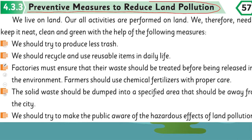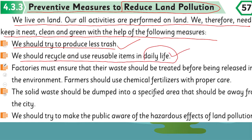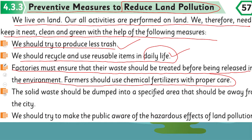Now let's talk about preventive measures — kis tariqa se land pollution ko control kiya ja sakta hai. We live on land; all our activities are performed on land. We therefore need to keep it neat, clean, and green. With the help of the following measures: we should try to produce less trash. We should recycle and use reusable material in daily life, takke trash kam ho jaye. Factories must ensure that waste is treated before being released into the environment. Farmers should use chemical fertilizers with proper care.